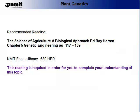If you are still having problems understanding the Agrobacterium transformation technique, I have found an additional resource: The Science of Agriculture: A Biological Approach by Ray Heron. If you look at Chapter 5 on Genetic Engineering, page 122, there is an illustration and a description of this method. This book is located in the NMIT Epping Library at the code on your screen. I also want to draw to your attention that the reading of this chapter, from pages 117 to 139, is a requirement of this topic and you may be examined on this material.